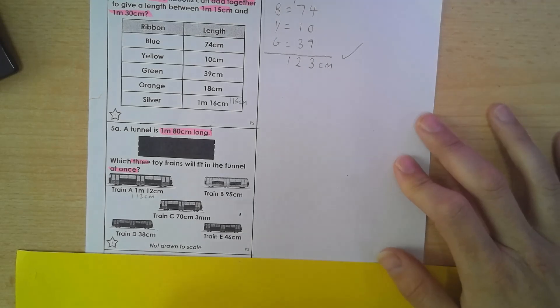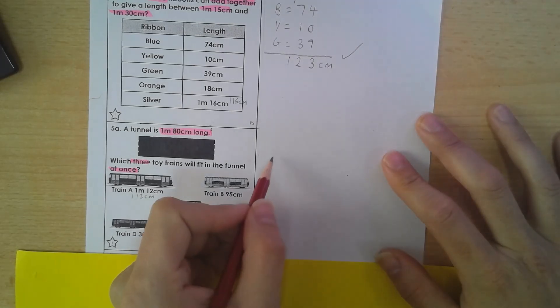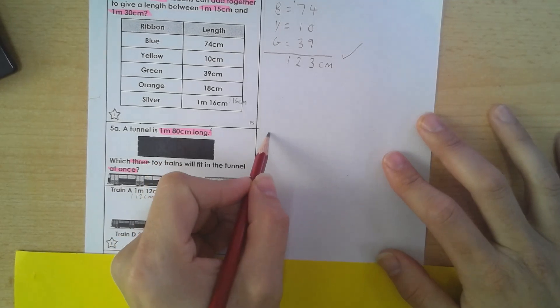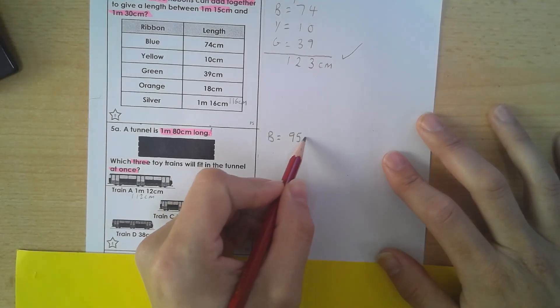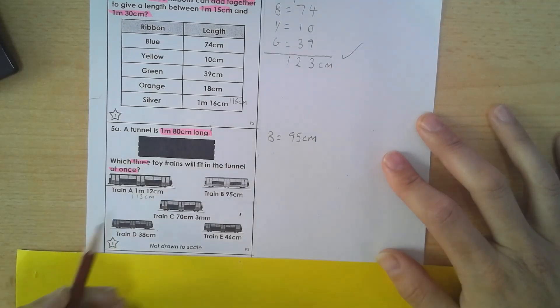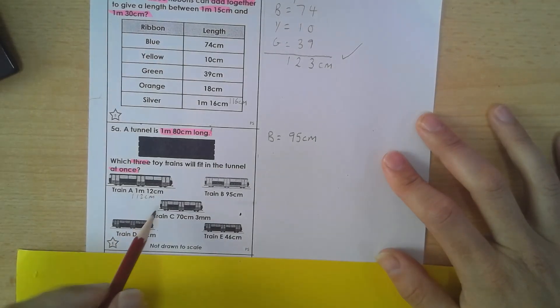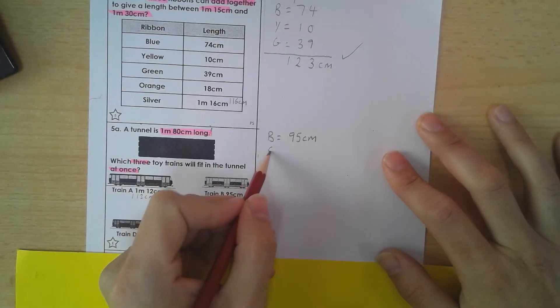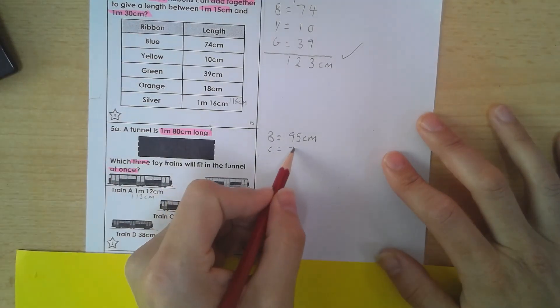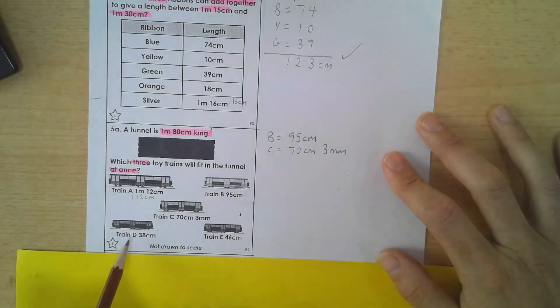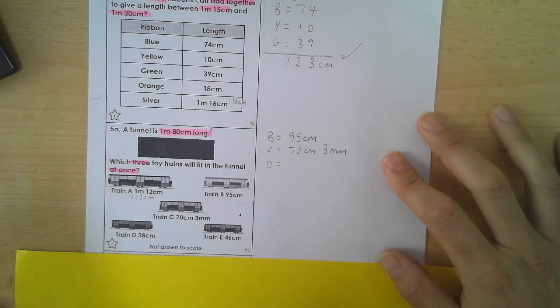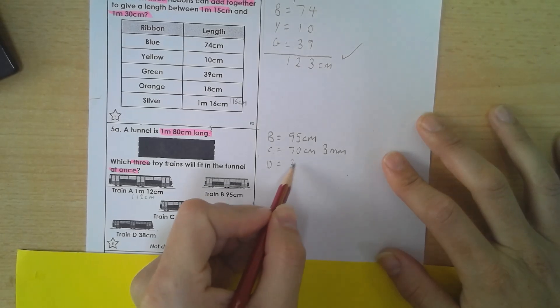So let's have a look. I'm going to pick, let's see, I'm going to pick B. Train B, I think, to start off with. Train B, and that's 95 centimetres. And I'm going to go for C, which is 70 centimetres and 3 millimetres. And, well, we've got B, C, D, why not? Get the D in there. And that's 38 centimetres.